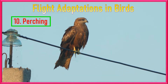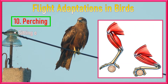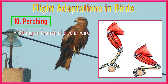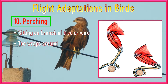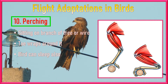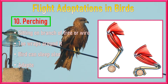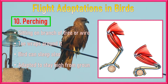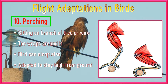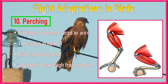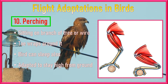Number 10: Perching. When a bird sits on the branch of a tree, its toes wrap around the twig — this is known as perching. The muscles are so well developed that a bird can sleep in that position without falling. This adaptation helps them to stay high from the ground to avoid predators.